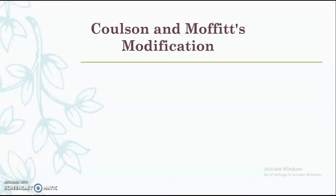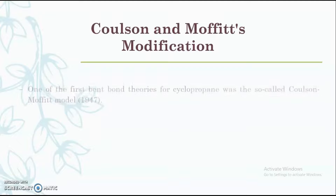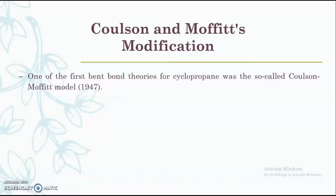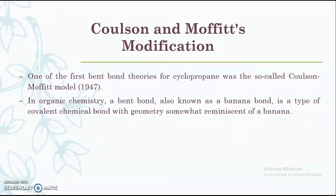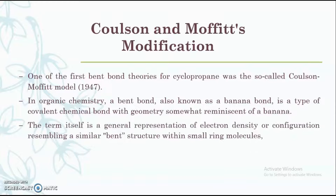First, we will discuss the Collagen-Moffitt's modification. Actually, this is not a theory — it explains how cyclopropane is able to achieve a bond angle of 60 degrees and how overlapping of the p orbitals of the carbon atoms is limited, which gives rise to the concept of the bent bond. In organic chemistry, a bent bond is also known as the banana bond — it is a type of covalent chemical bond with geometry somewhat reminiscent of a banana, where there may be an increase or decrease in the S-character of that particular bond.